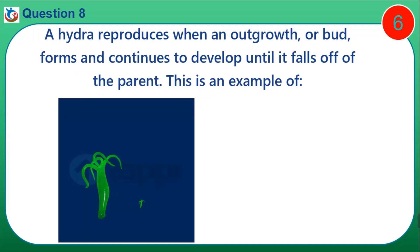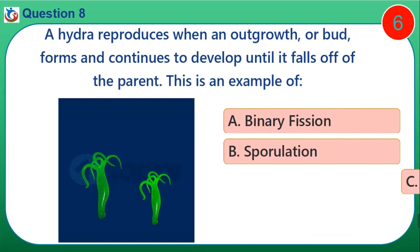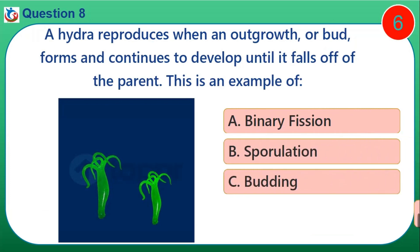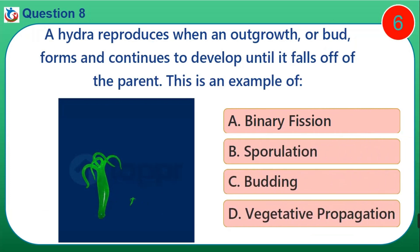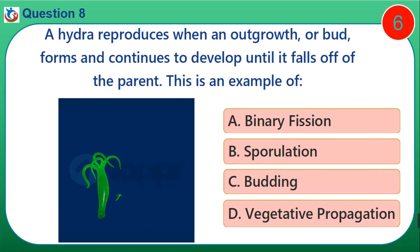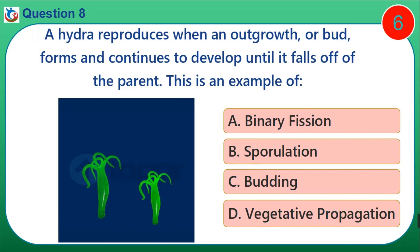Question 8. A hydra reproduces when an outgrowth of a bud forms and continues to develop until it falls off of the parent. This is an example of: A. Binary fission. B. Sporulation. C. Budding. D. Vegetative propagation.